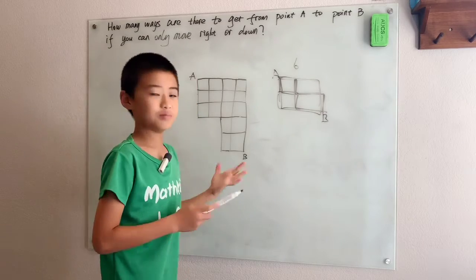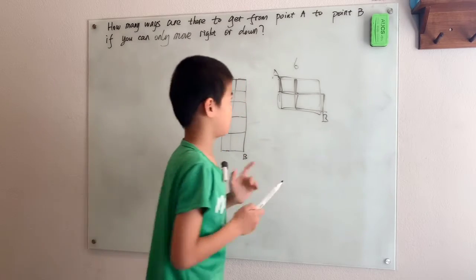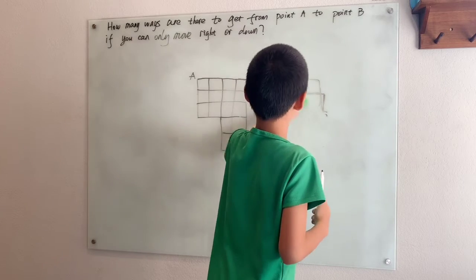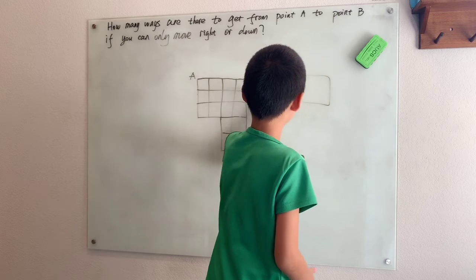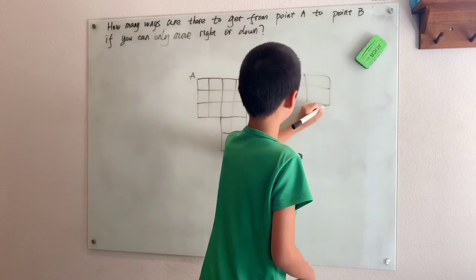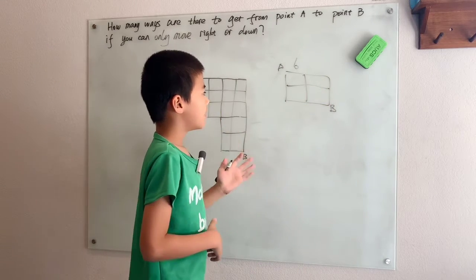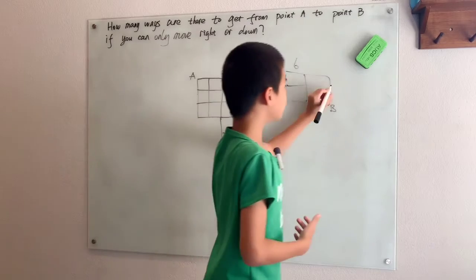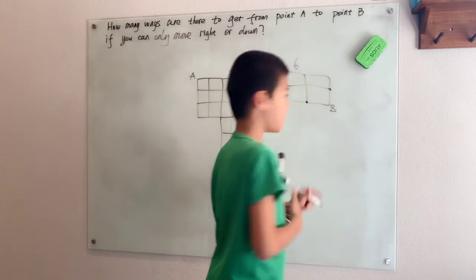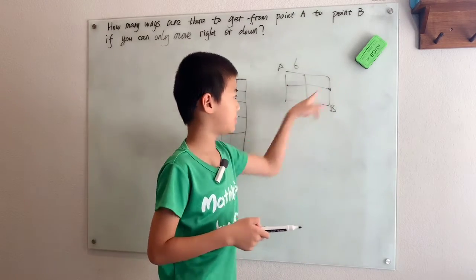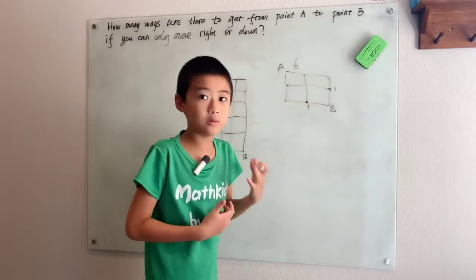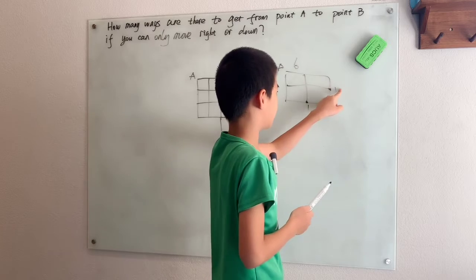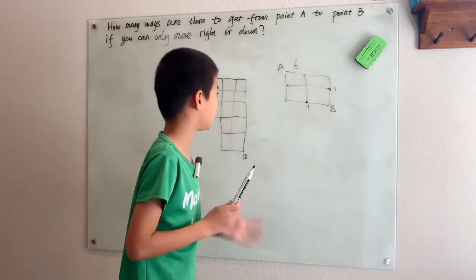Well again we can find a much better way to do this. Here, same two by two square. We can think, well first of all if A was only this far away from B, there's only going to be one way to go down to B. From here, one way. From here there's only one way to get to B.